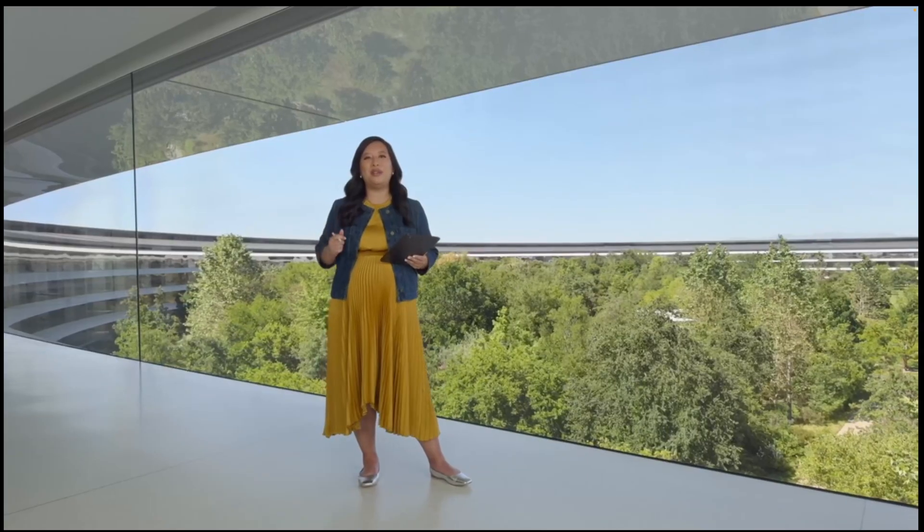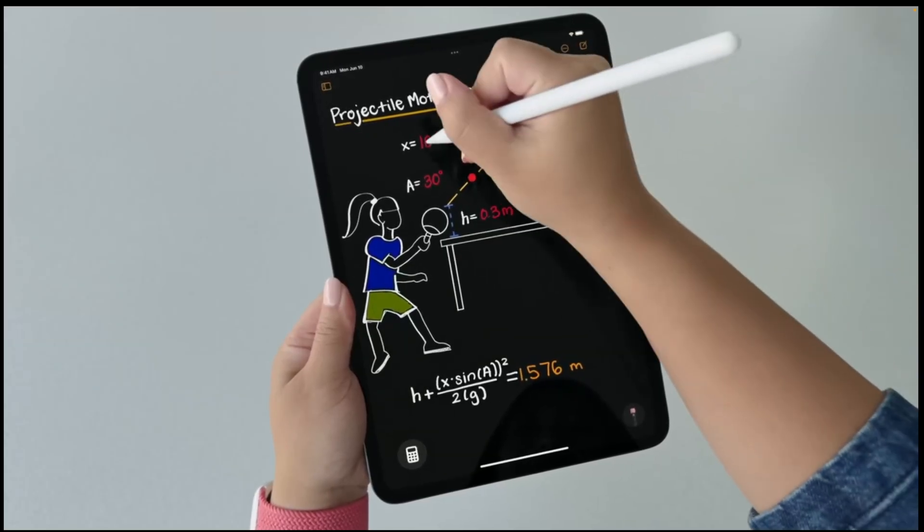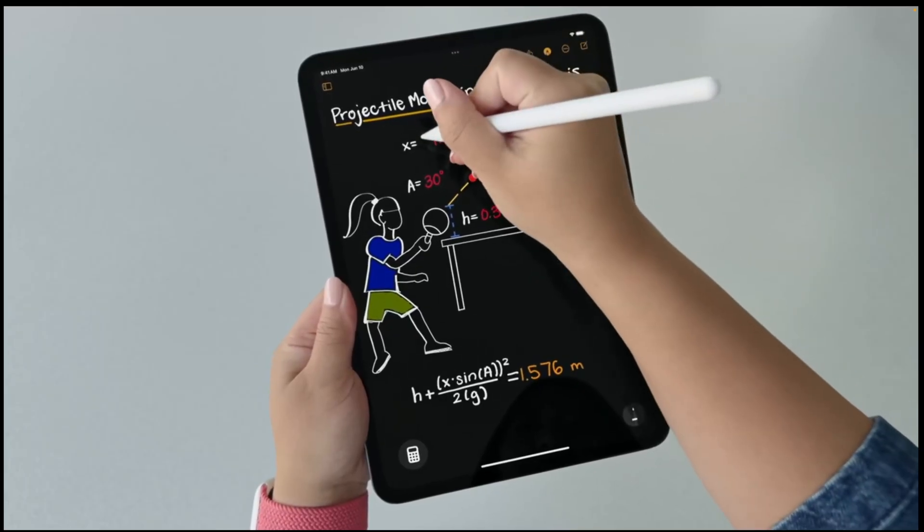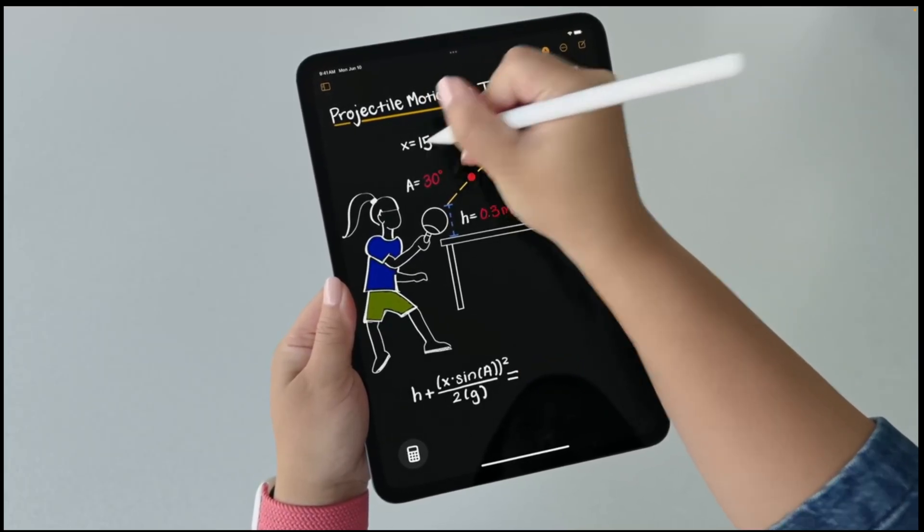What's powerful about variables is that if I change one, like the velocity of my shot, it will change the related results too.